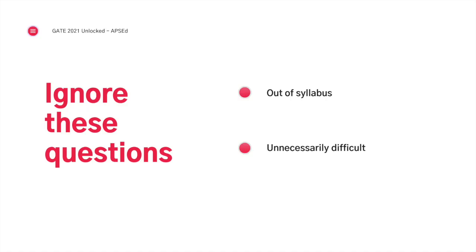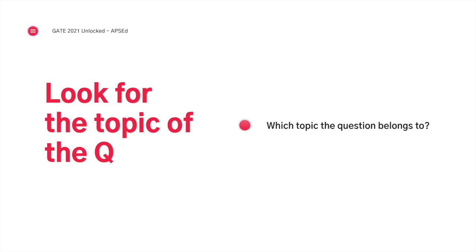First and foremost, you have to ignore some questions if they are out of syllabus. In some tests, you might find questions which are unnecessarily difficult — just keep them aside and move on. Let's say it is in syllabus but you still went wrong. The first step is to look for the topic of the question — which topic does it belong to? The question we saw is from engineering maths, from probability. So now you know the topic.